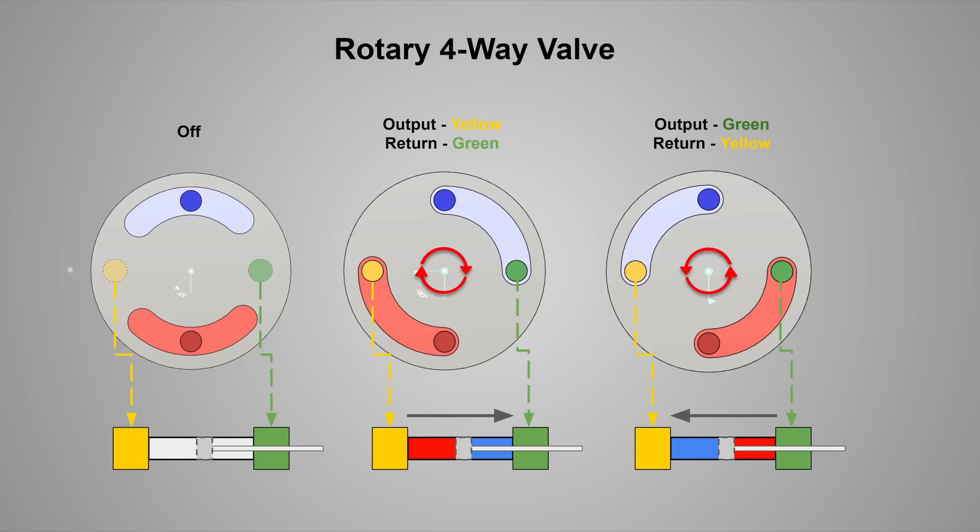In the second graphic, the valve is rotated. So the pressure side connects to the yellow port and the green port is connected to the return to tank. This causes the cylinder to extend. In the last graphic, the valve is rotated so that the pressure side connects to the green port and the yellow port is routed to return to tank. And this contracts the cylinder.